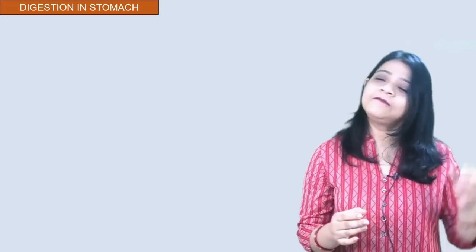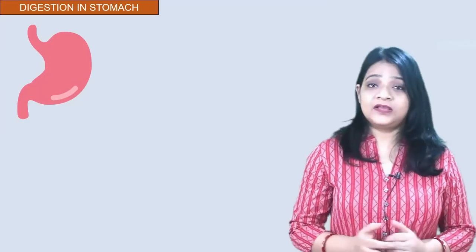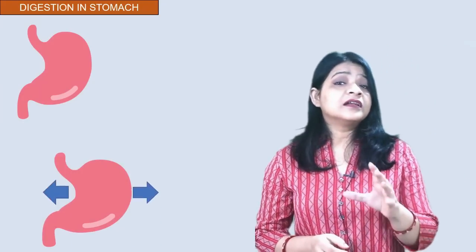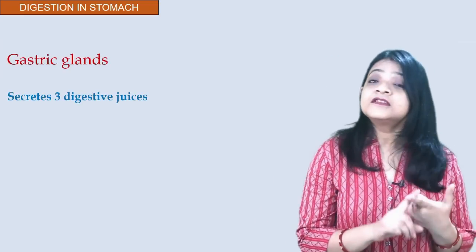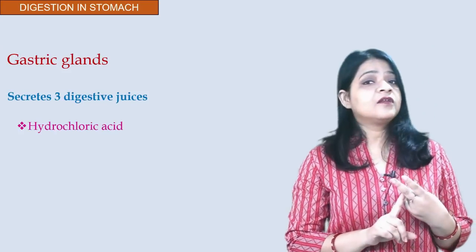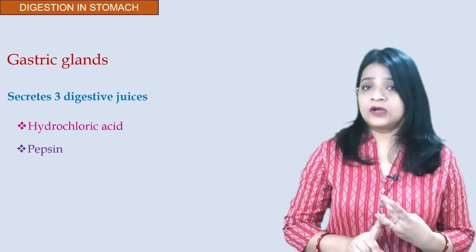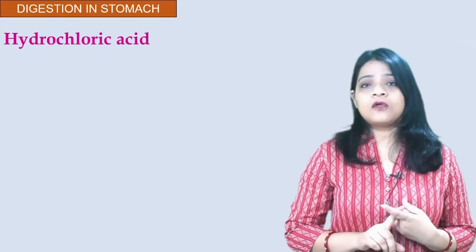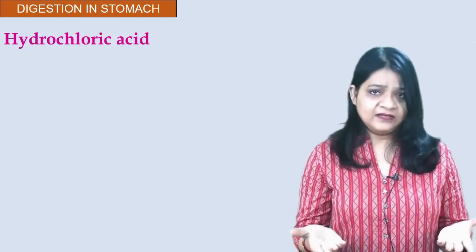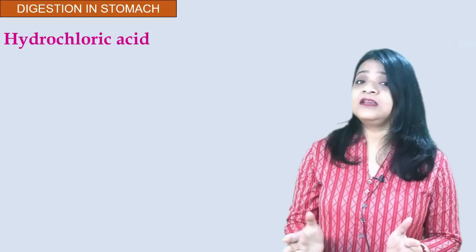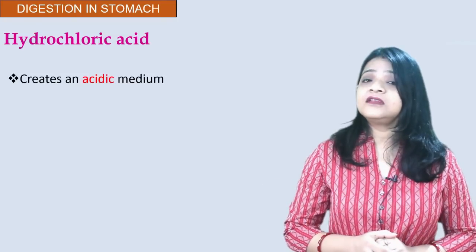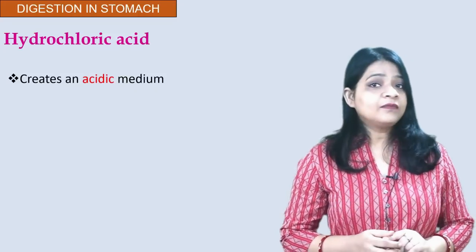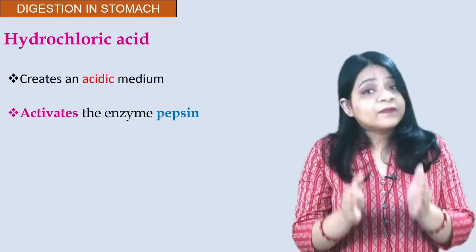The food now reaches the stomach. The stomach is the place where maximum digestion occurs. The stomach is elastic — if you fill it with food it will expand. The stomach contains gastric glands that secrete three types of juices: the first one is hydrochloric acid, the second one is pepsin, and the third one is mucus. Hydrochloric acid is an acid, so it produces an acidic medium and helps digest the food.